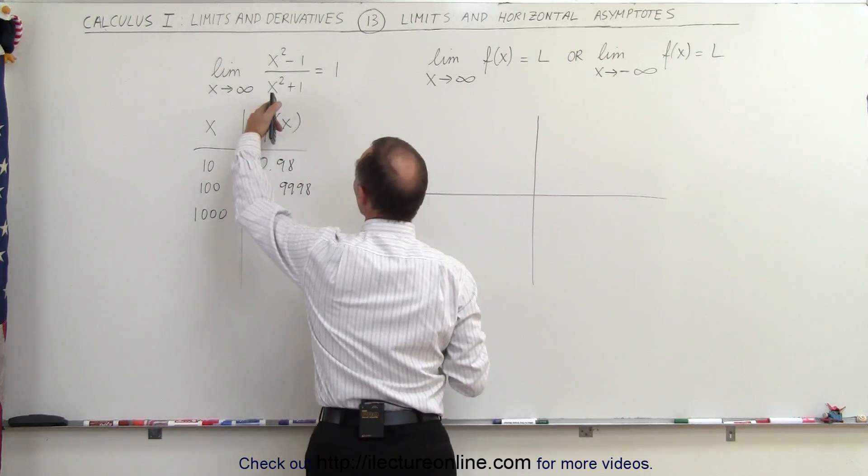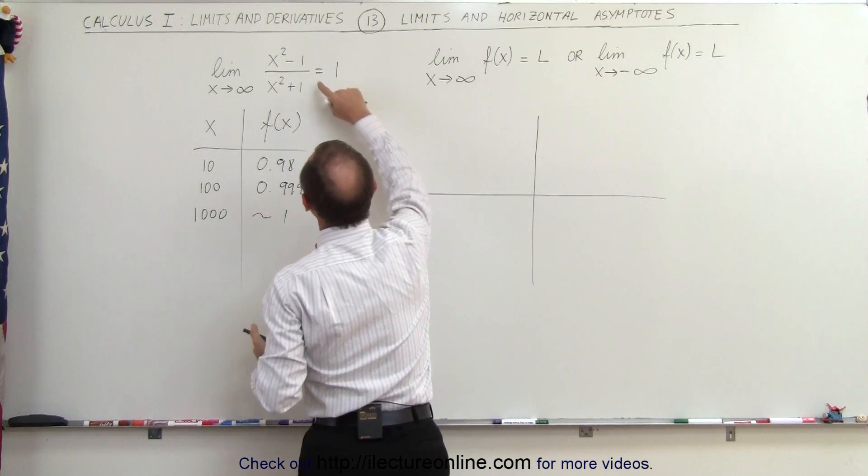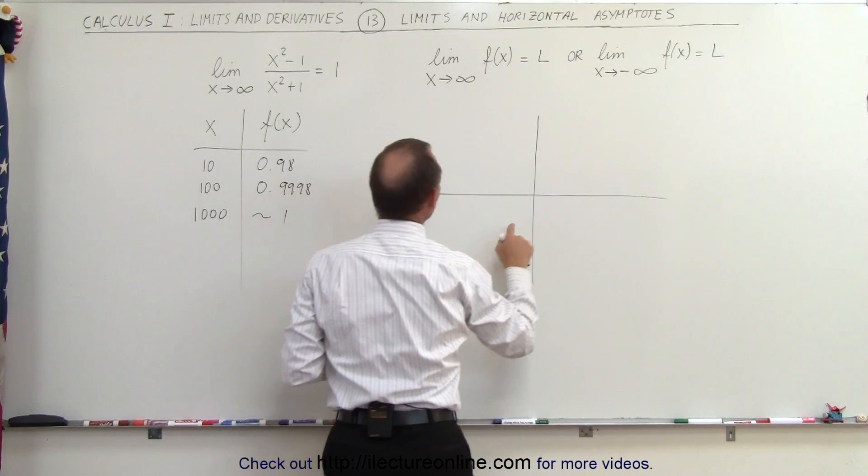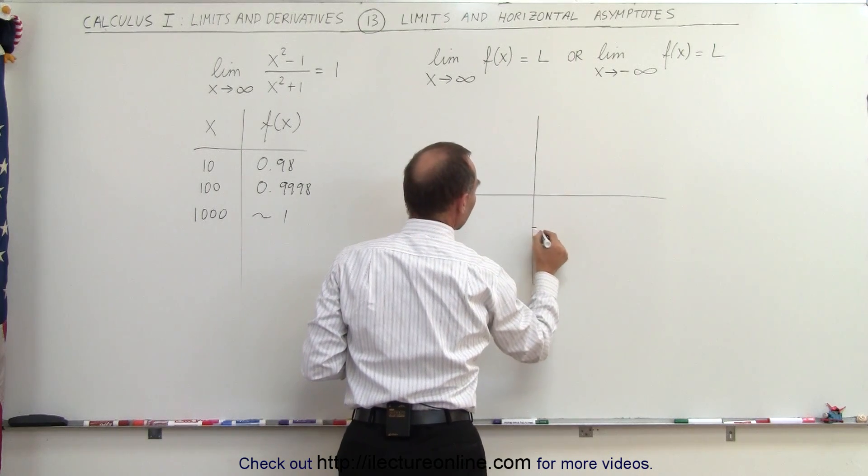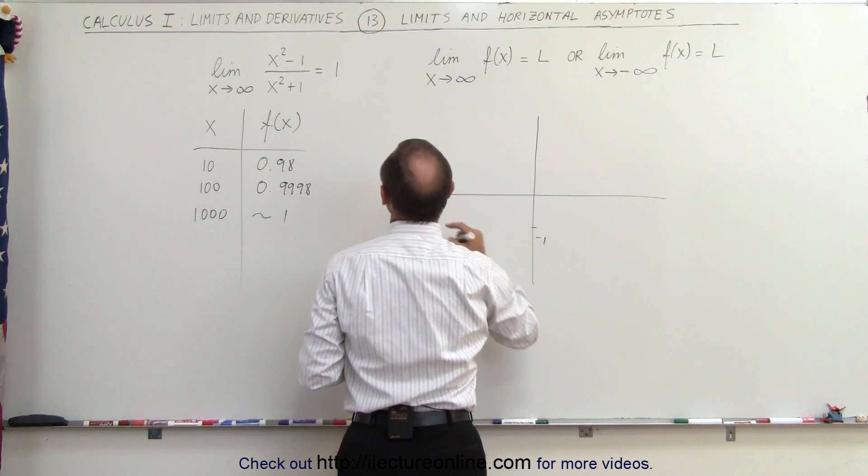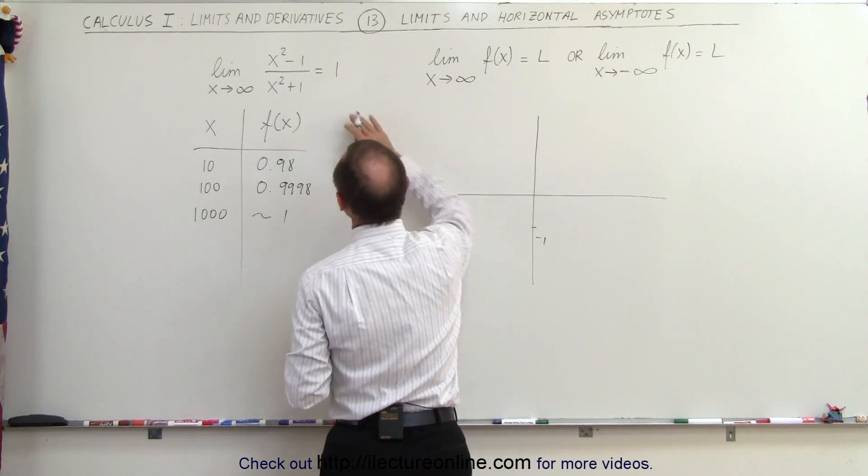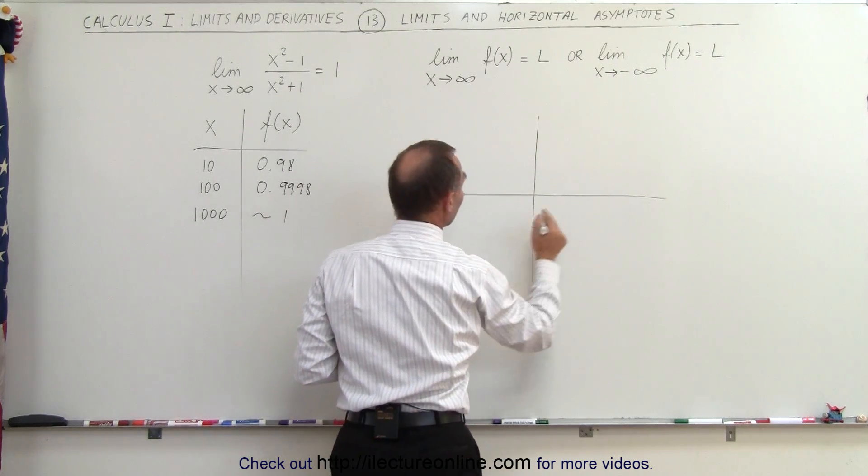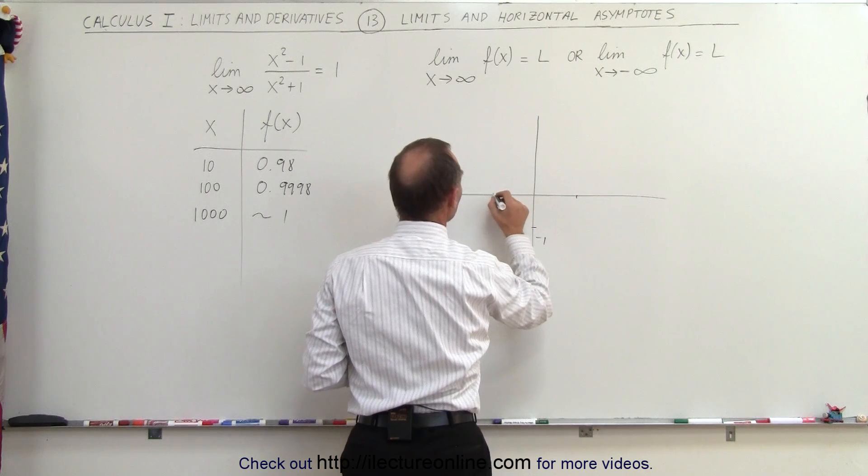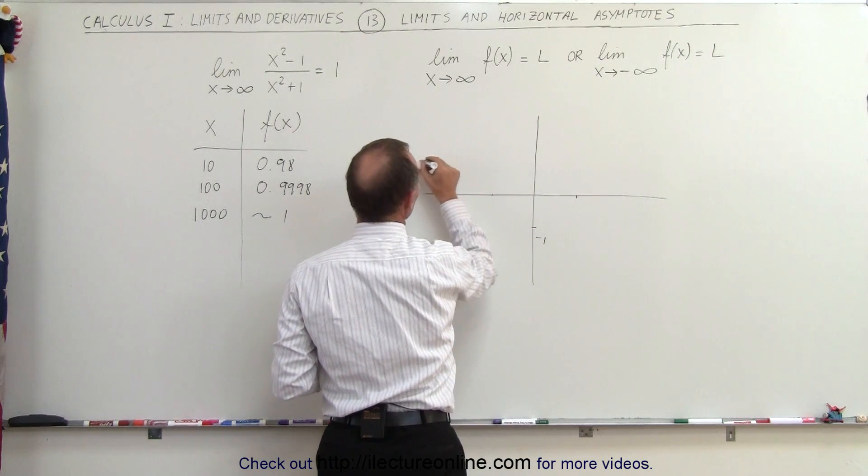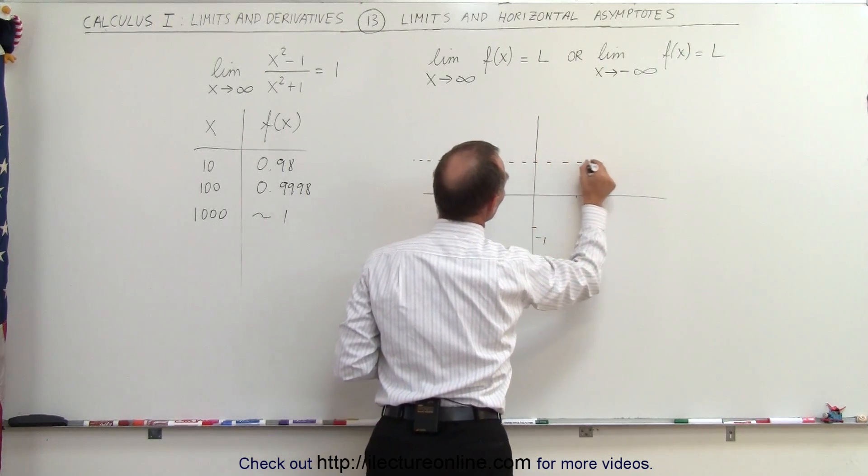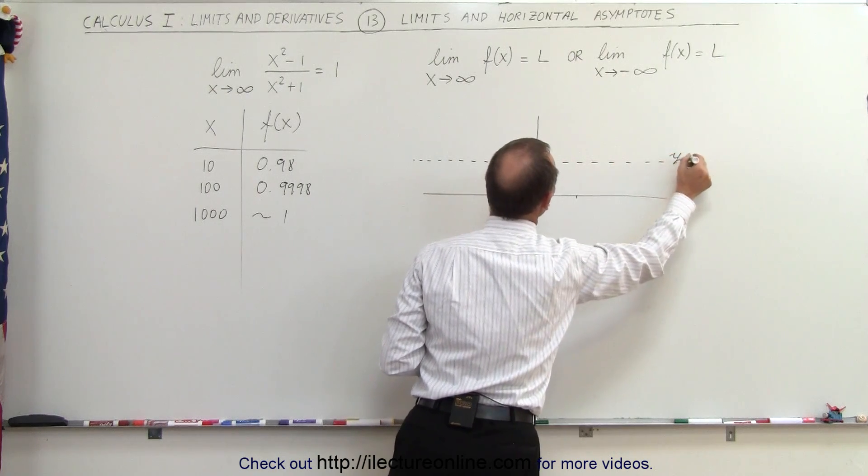Notice as x goes to 0, the function becomes negative 1. So we have negative 1 right here when it's 0. And when x is equal to 1 or negative 1, the function is 0. So it's 0 at 1 or negative 1. And then we have an asymptote line at y equals 1. So this is y equals 1.